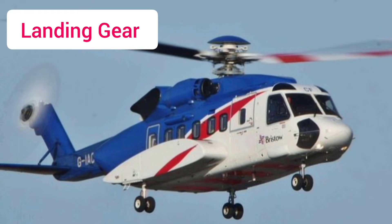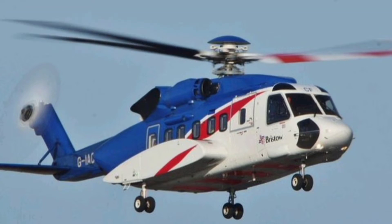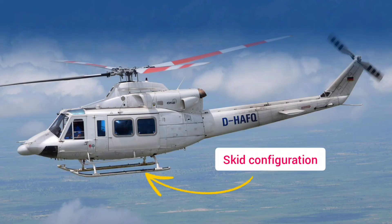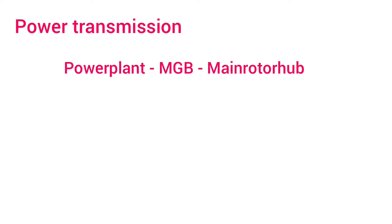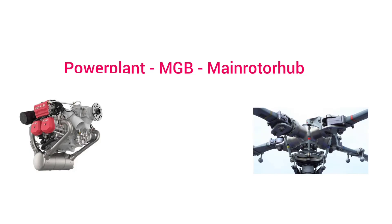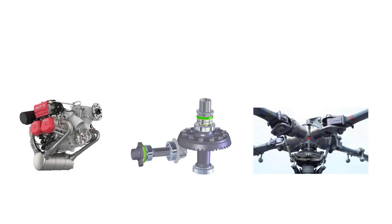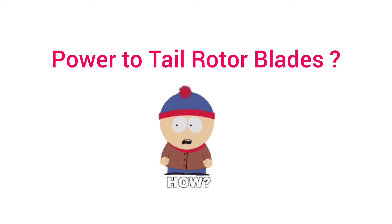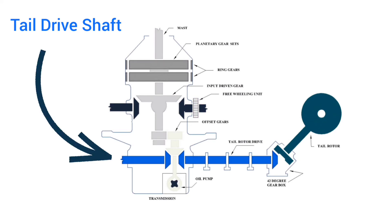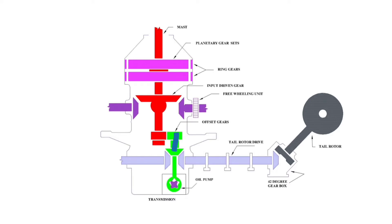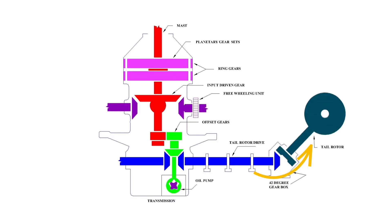Landing gear configuration — some helicopters have a landing gear configuration the same as that of airplanes, and some have a skid configuration. Power is transmitted from the power plant to the main rotor blades with the help of the main gearbox. The power required by the tail rotor blades is transmitted with the help of the tail drive shaft, which transfers the power obtained from the power plant to the tail rotor hub — and this power is also transmitted via the main gearbox.